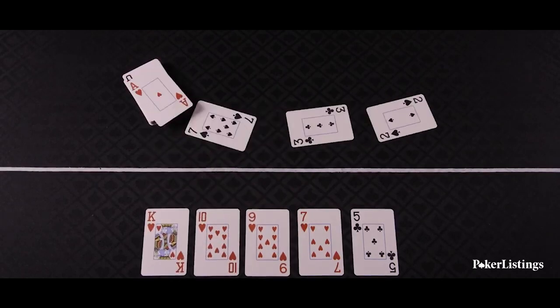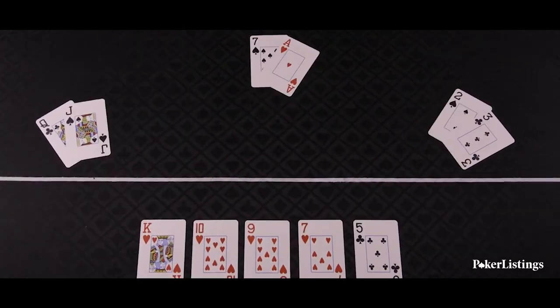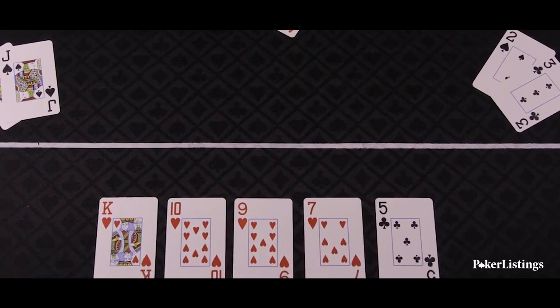In Texas Hold'em, hands are made up of the best five cards from a player's two hole cards and the five community cards.